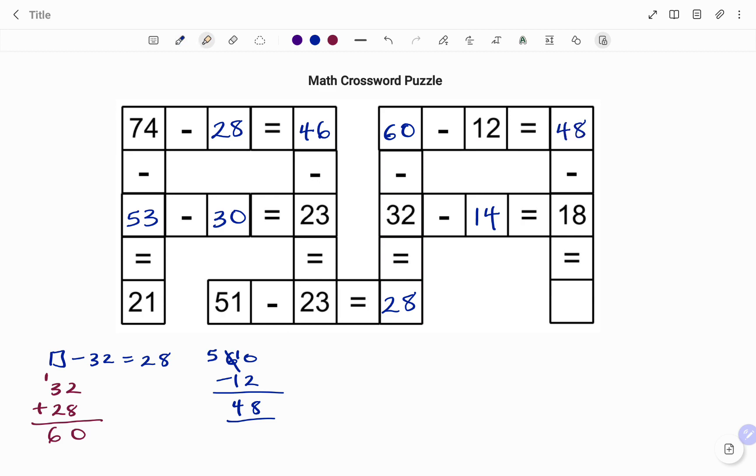And for the last column, 48 minus 18. I have 48 minus 18. 8 minus 8 is 0. 4 minus 1 is 3. So I have 48 minus 18 equal to 30. Thanks for watching. Bye.